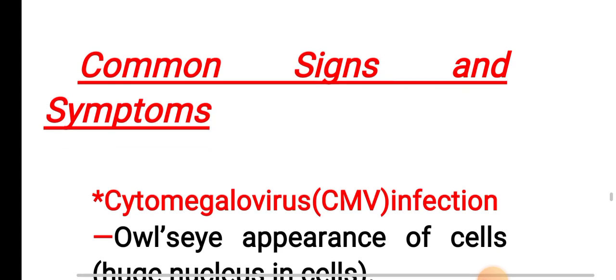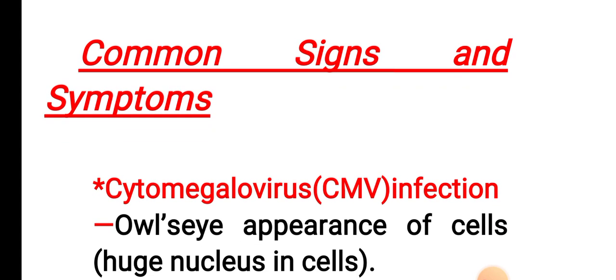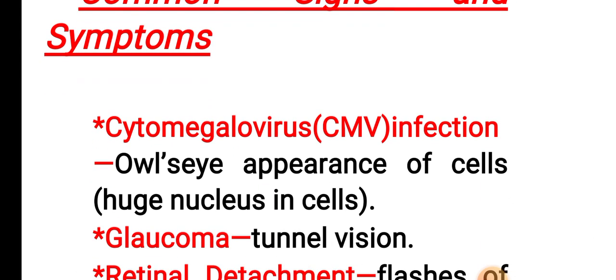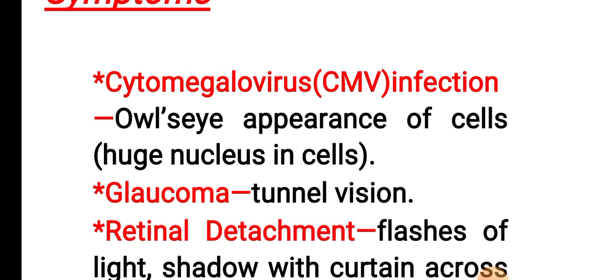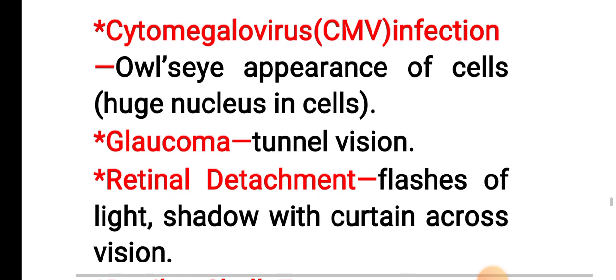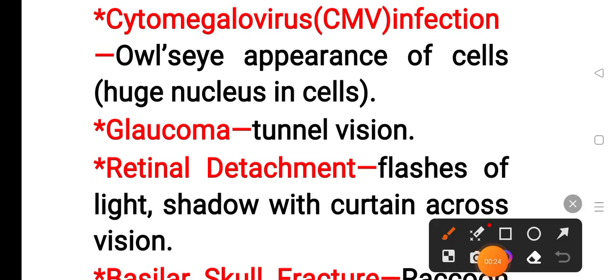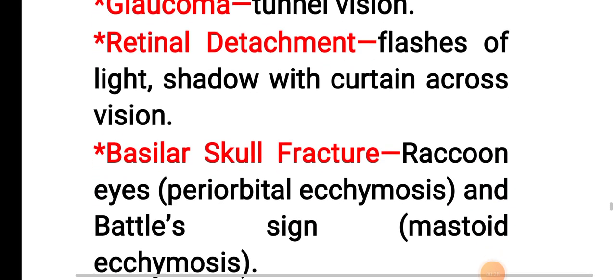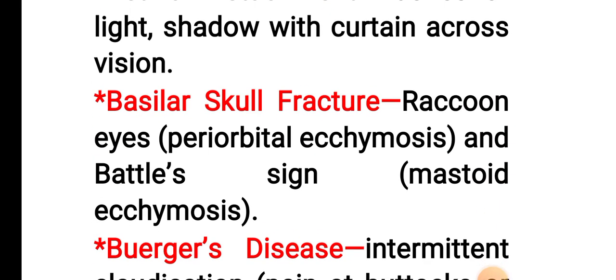In cytomegalovirus, CMV infection, the outside appearance of cells shows a huge nucleus in the cell. In case of glaucoma, tunnel vision is present. In case of retinal detachment, flashes of light and a shadow with a curtain across vision. In case of basilar skull fracture, raccoon eyes — periorbital ecchymosis — and Battle's sign mastoid ecchymosis are present.